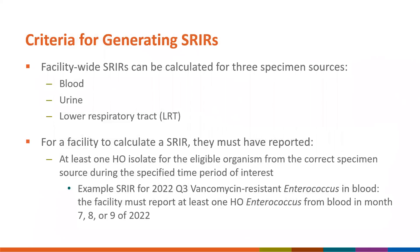Hospital level SRIRs can be calculated for three specimen sources: blood, urine, and lower respiratory tract. In order for your facility to calculate a SRIR, they must have reported at least one hospital onset isolate for the eligible organism from the correct specimen source during the specified time period of interest. For example, to receive an SRIR for vancomycin-resistant Enterococcus in quarter three of 2022, a facility must have reported at least one hospital onset Enterococcus isolate from blood in months seven, eight, or nine of 2022.